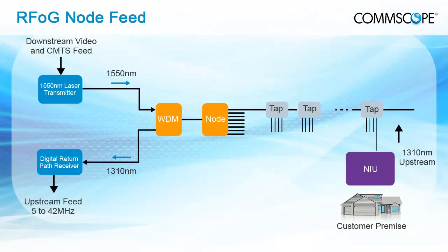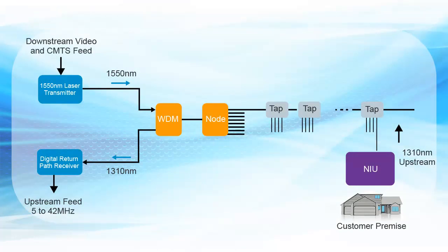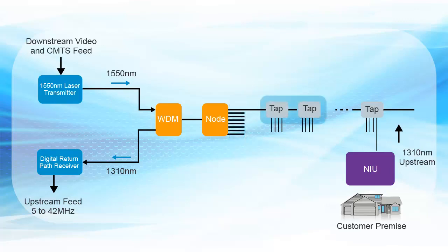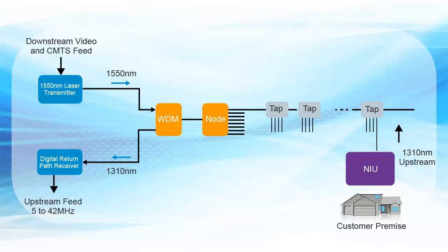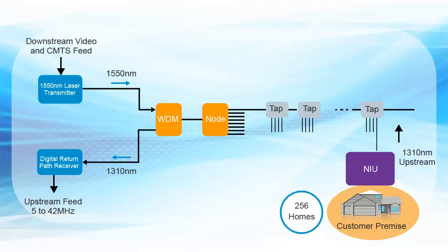This diagram illustrates a node-based architecture. The architecture and signal flow is similar to head-end feed, except for the addition of a 1 to 8 split and amplification stage at a node feeding 8 fibers to the taps. In this architecture, the node can be placed as far as 40 kilometers from the head-end and each individual output fiber from the node can feed up to 32 homes via the taps, serving a total area of 256 homes per node.